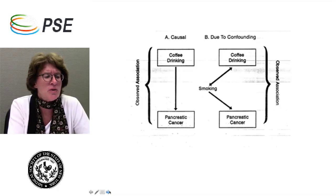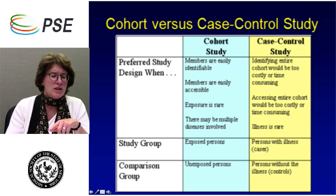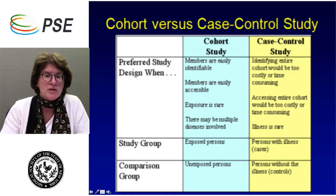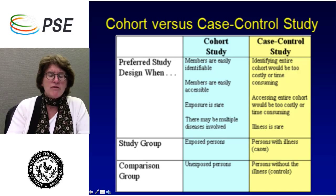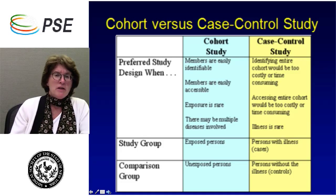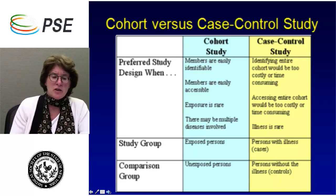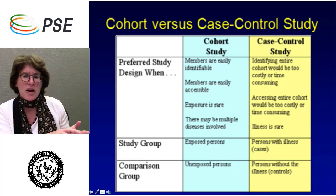In summary, let's compare cohort versus case-control studies. You would do a cohort study when you can easily identify a group and have access to them, you're not looking at a rare disease, and there may be multiple diseases. You're looking at exposed people versus unexposed people, being careful about what defines being exposed and what defines being not exposed. With the case-control study, you've identified people with the disease, you're going back in time retrospectively, and comparing those with the disease to those without. You don't have the time or money to do a cohort, so you select those with the disease and those without.